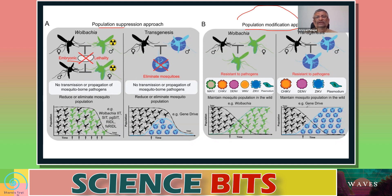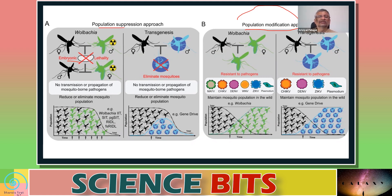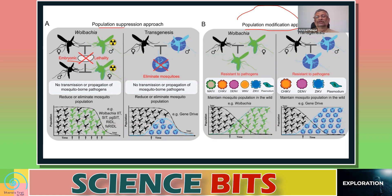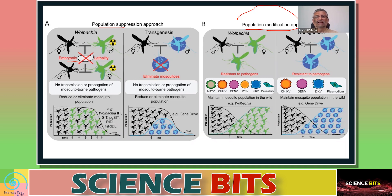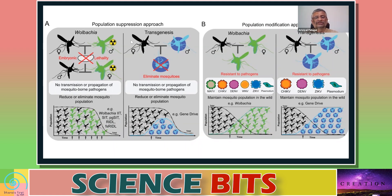The second approach is population modification, where you modify the nature of the mosquito population. For example, you make the mosquito carry a particular bacteria — harmless to humans — that resists pathogens like Zika and dengue from infecting the mosquito's body. This way, even if the mosquito bites you, it cannot transmit the pathogen. PGSIT falls under the population suppression approach.